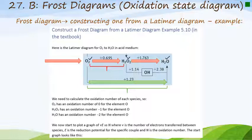First, calculate the oxidation number of each species: oxygen is zero, hydrogen peroxide has oxygen at −1, and water has oxygen at −2. We then plot νE versus N, where ν is the number of electrons transferred, E is the reduction potential for the specific couple, and N is the oxidation number. The reduction potential values are written on the arrows as in Latimer diagrams.